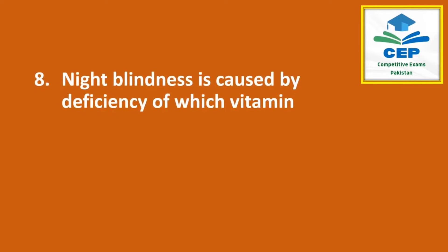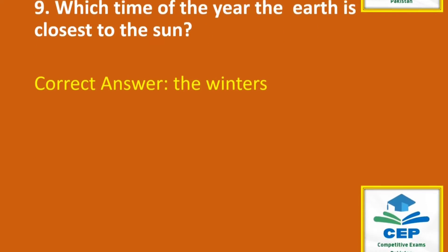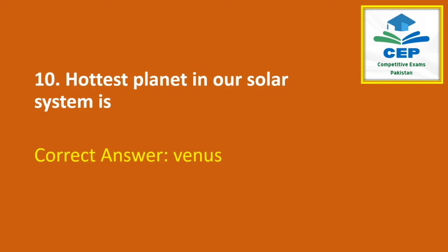Night blindness is caused by deficiency of vitamin A. Which time of the year is the earth closest to the sun? The correct answer is winters. The hottest planet in our solar system is Venus.